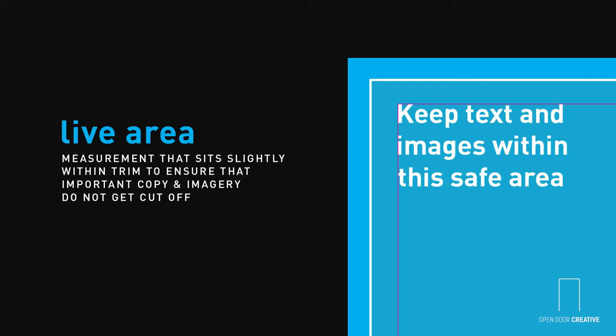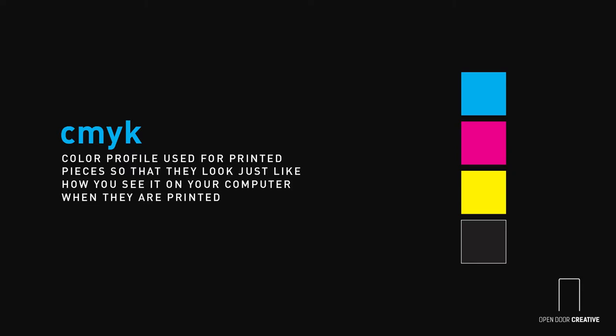The live area is a measurement that sits slightly within the trim to guarantee that copy and imported imagery does not get cut off on your final piece. Also known as 4-color, CMYK stands for cyan, magenta, yellow, and black.